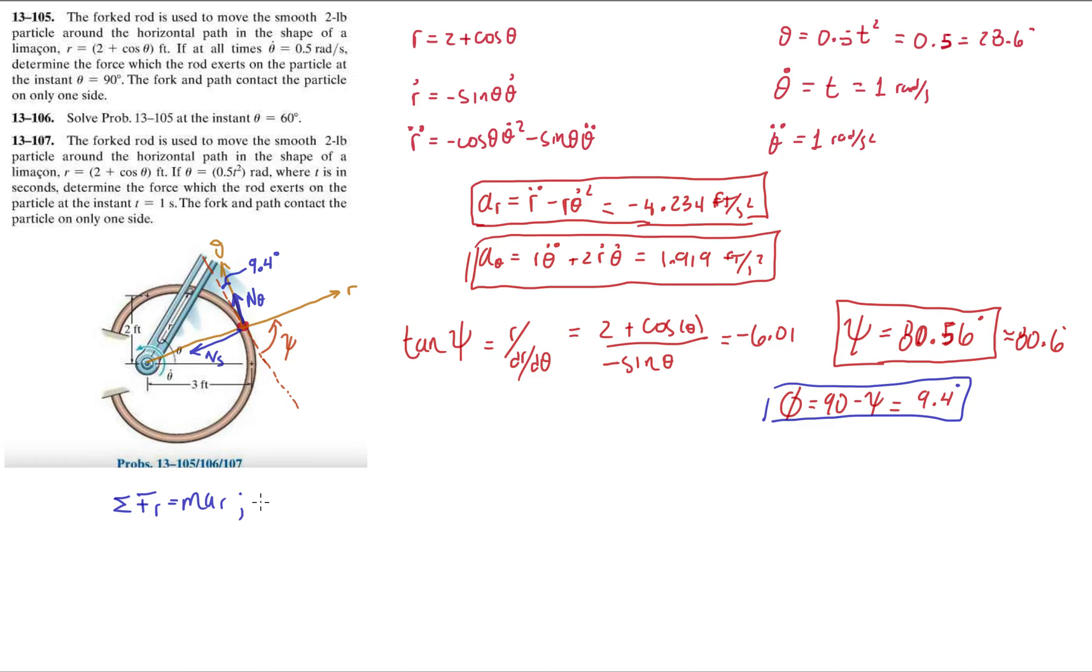Let's just do forces along the radial direction. Alright, so we have minus, it's going in the negative r direction, ns cosine 9.4, equals the mass, right, times the acceleration, minus 4.234, alright. So far, I've guessed the direction of the normal forces correctly, so I have my normal force by the slot on the particle, is 0.267 pounds. Okay, they're not asking for this, alright, they're asking for the force by the rod on the particle. So, let's do that next.